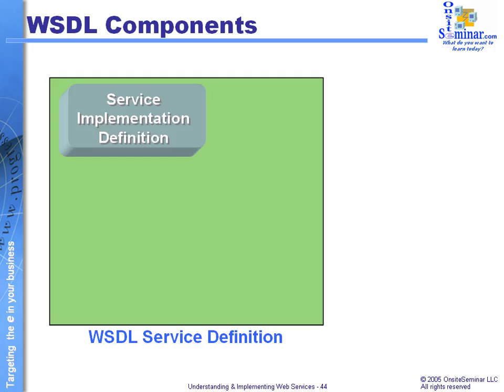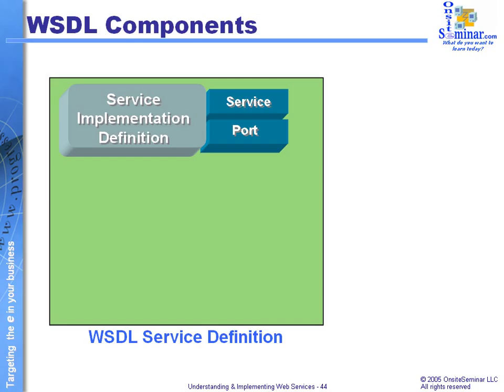One is going to be the service implementation definition. We simply want to identify where the web service happens to be and how to contact it — port-based information and things like that. This is going to have two significant sub-pieces: a service piece and a port piece. The job of the service piece is to identify all of the related entry points, so we need to identify exactly where the service actually is and what physical endpoint on the web it's related to.